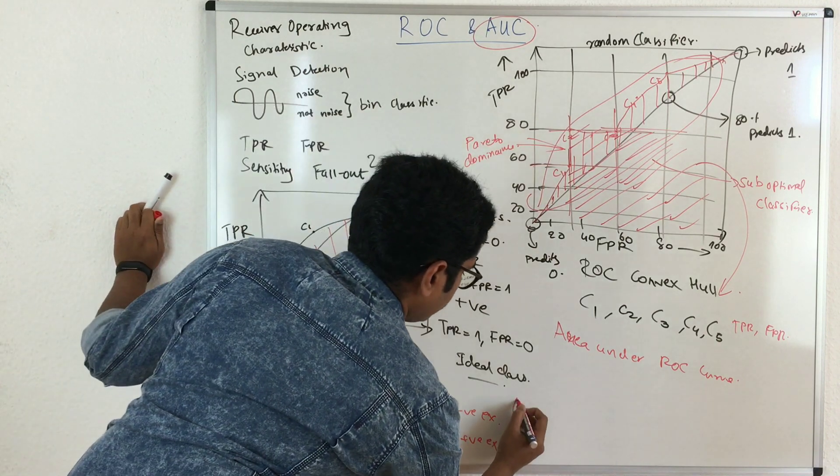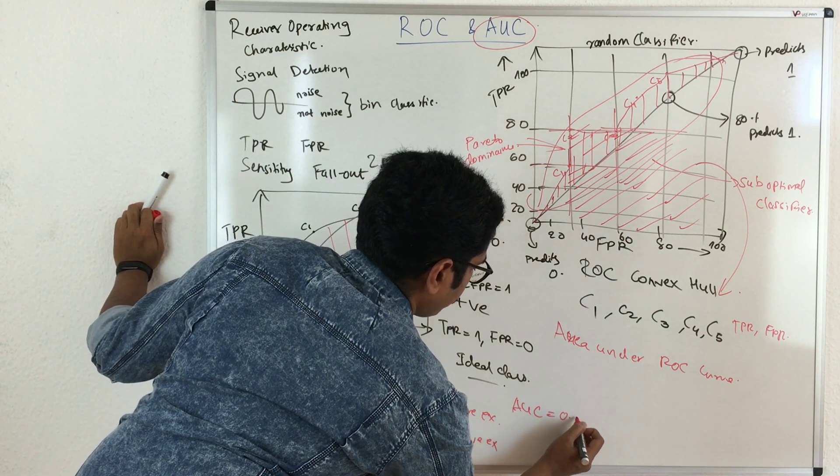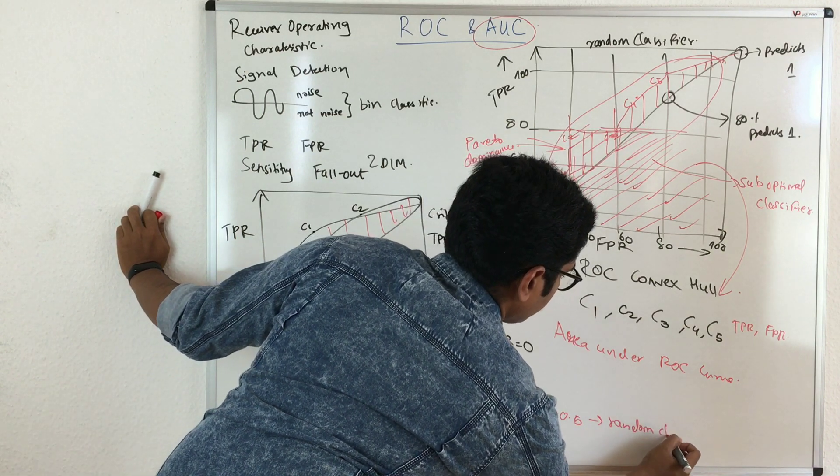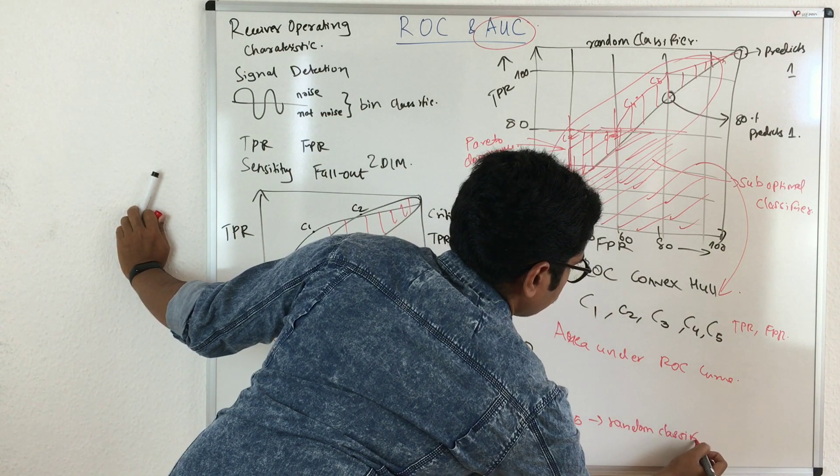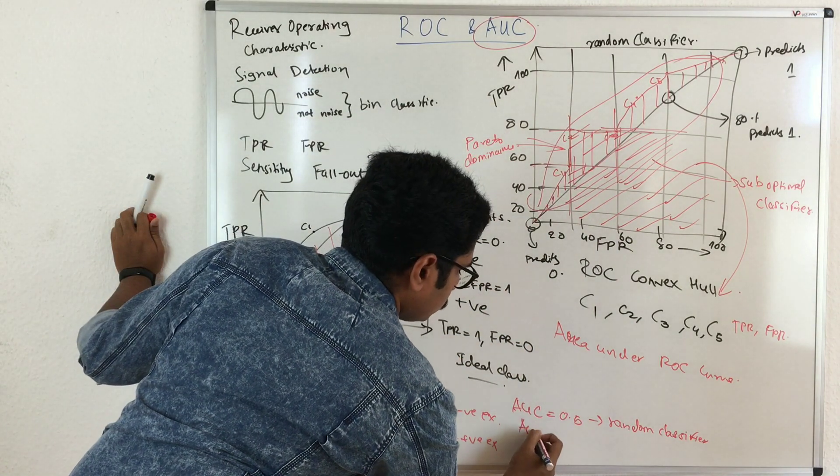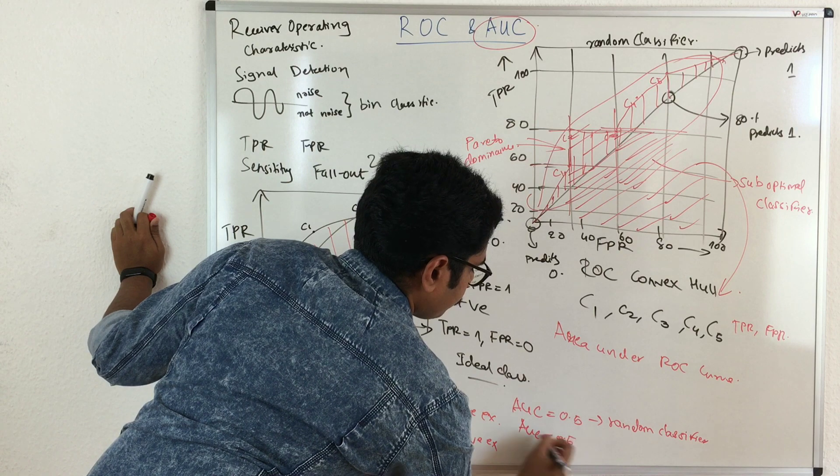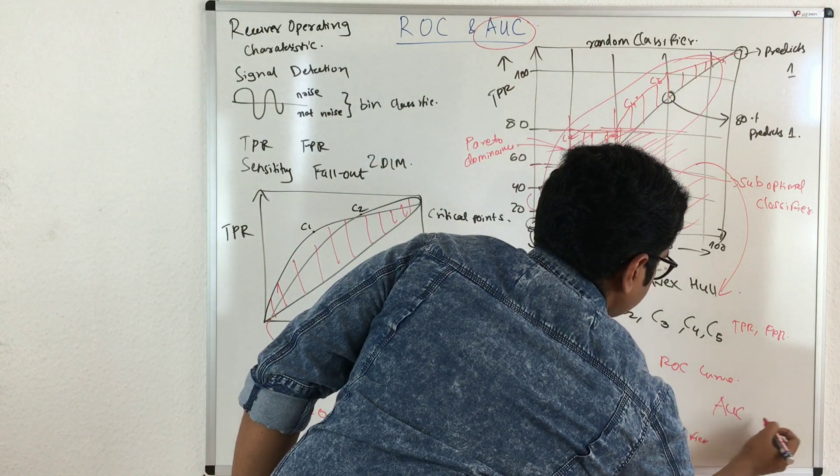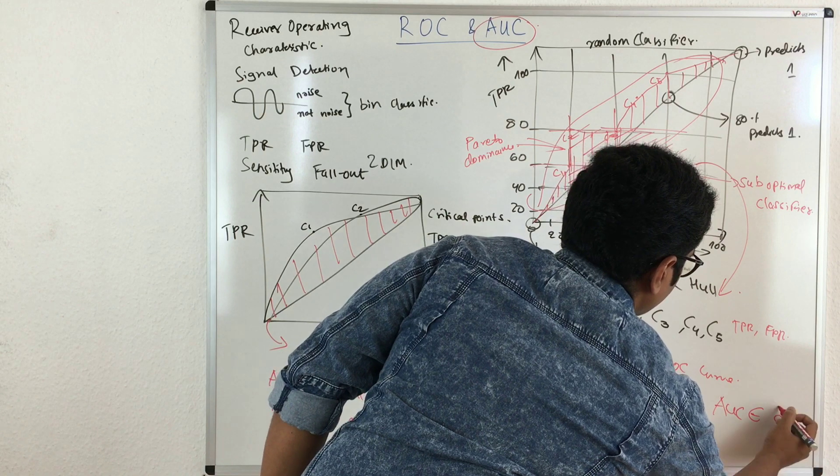If you have your AUC as 0.5, that will be of a random classifier. Basically you do not have any classifier whose AUC is less than 0.5. So that is a condition here. We can say that AUC basically has the domain from 0 to 1.